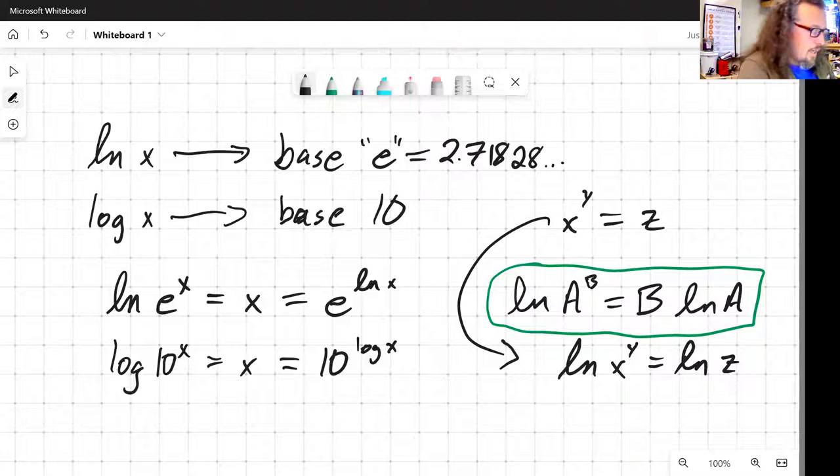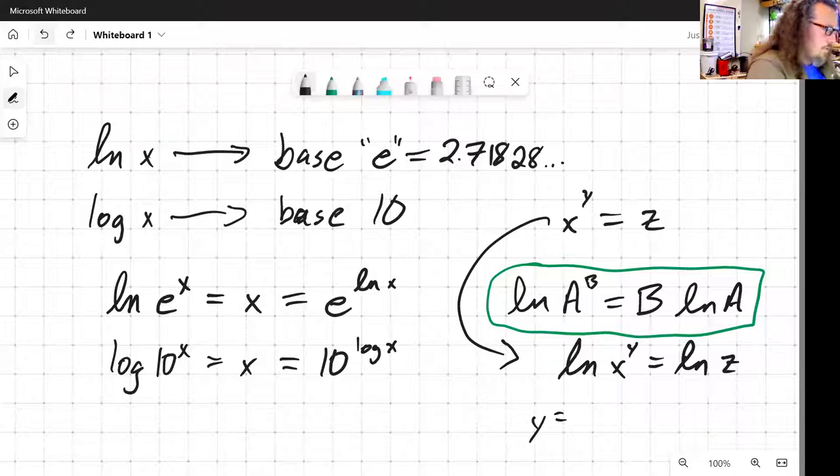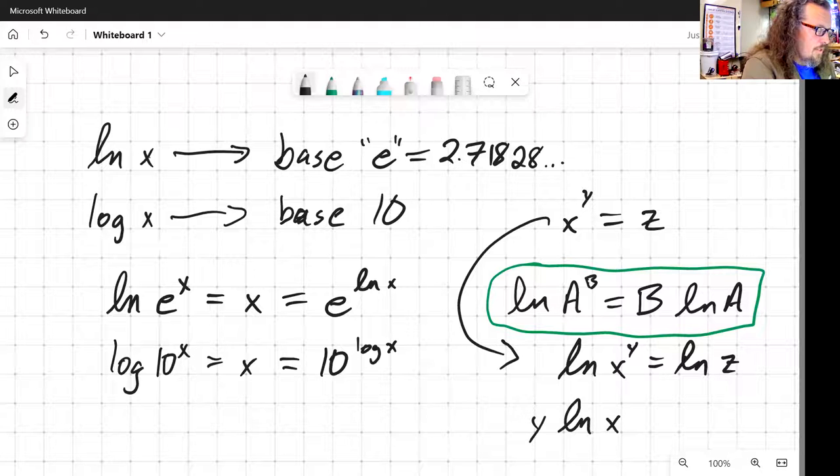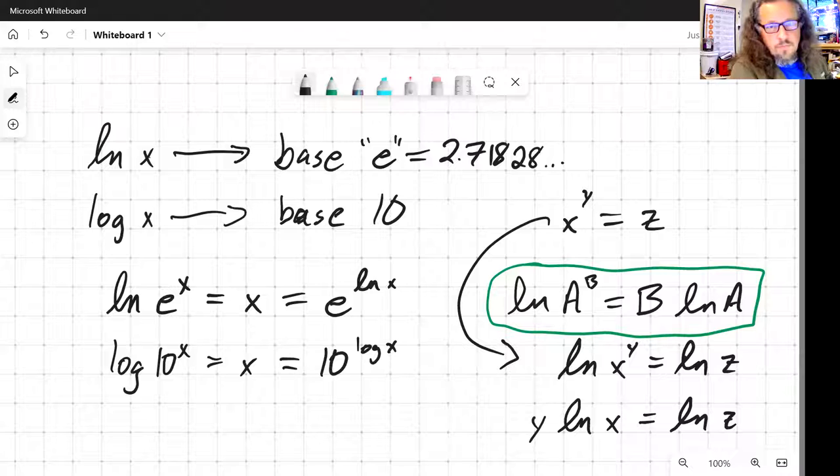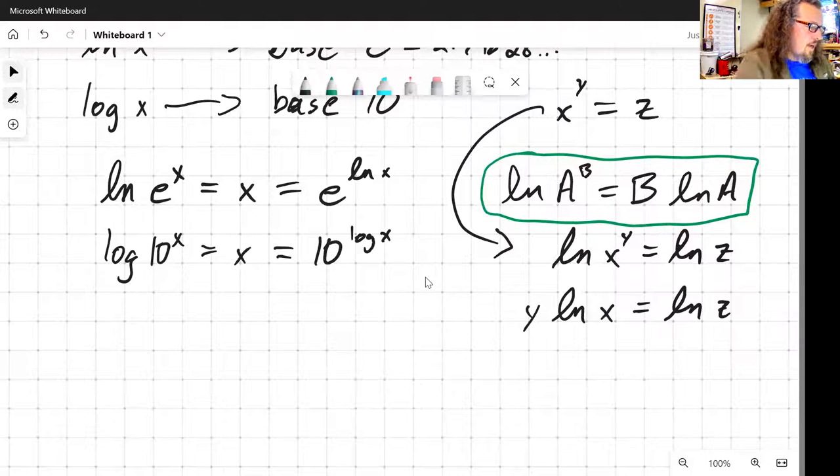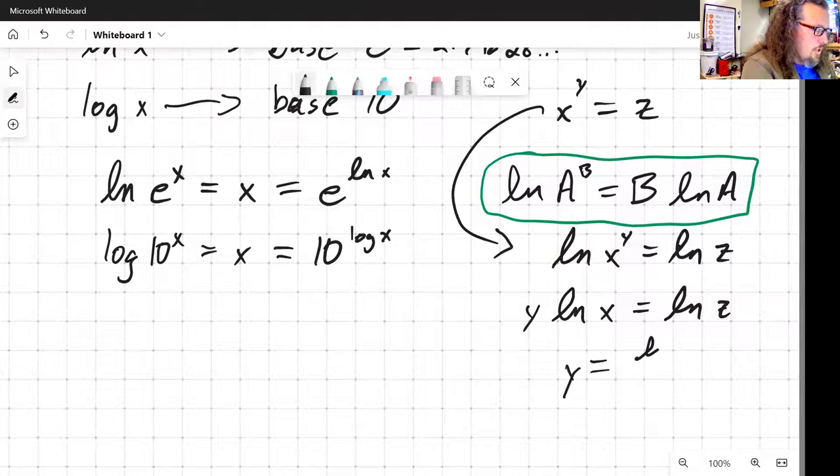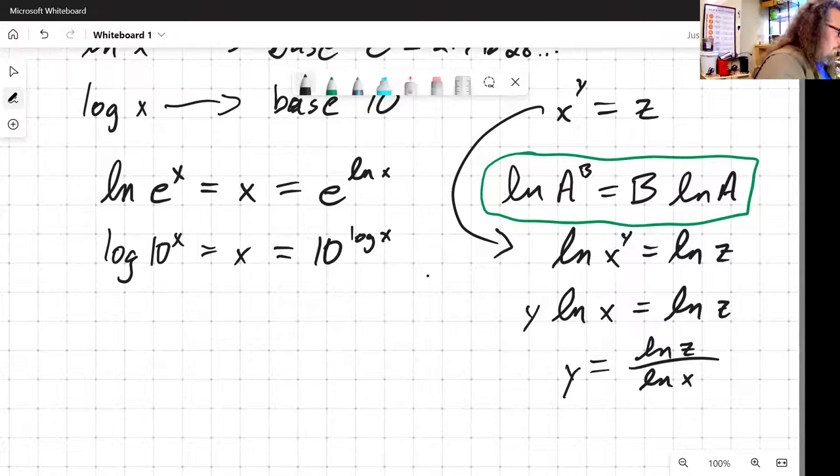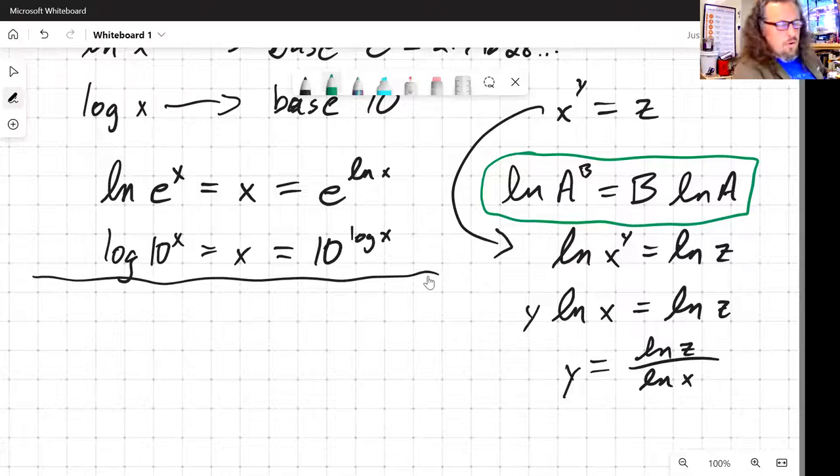natural log of x to the y is equal to natural log of z. I just took the natural log of both sides. And y times natural log of x is equal to natural log of z. Well, now I've gotten my exponent out of the exponent essentially. So I can come in here and now y is equal to natural log of z divided by natural log of x. So there's a useful relationship.